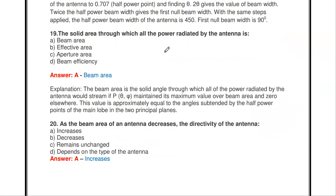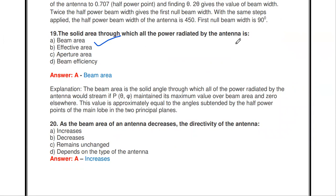The solid angle through which all the power radiated by the antenna passes is called — beam area, effective area, aperture area, or beam efficiency? The answer is beam area. The solid angle through which all power radiated by the antenna passes is called beam area.